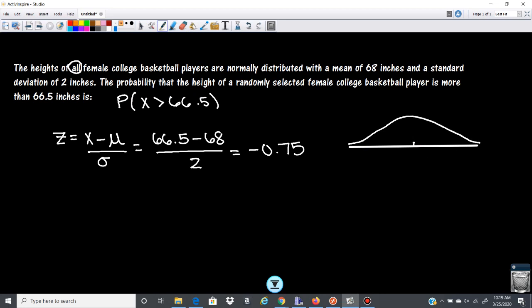Okay, so let's draw this. There we go. Here's our mean of zero. So negative 0.75, we're going to say it's probably about right here. And we want that it's greater than, so we're looking at this area here.